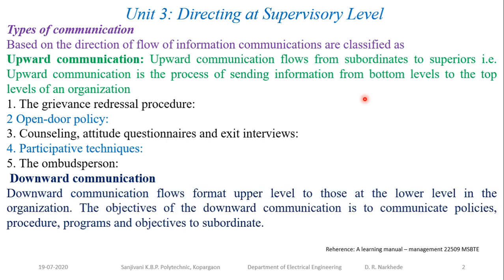In downward communication, the information flows from top-level management to the bottom level — from upper level to lower levels in the organization. The objective of downward communication is to communicate policies, procedures, programs, and objectives to the subordinates. The main purpose is to communicate how work is to be done in the organization.